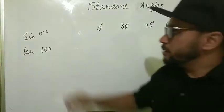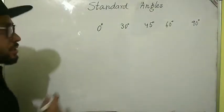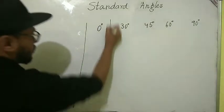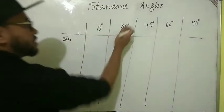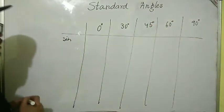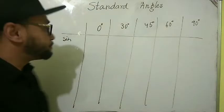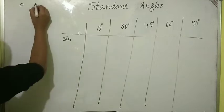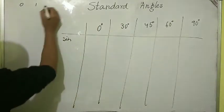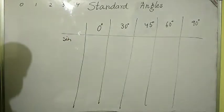We will discuss all the trigonometric ratios for these standard angles one by one. The first one is sine. To find the sine values, we use a simple method: you write the numbers in series — 0, 1, 2, 3, 4 — and then divide all these values by 4.